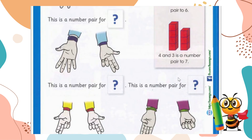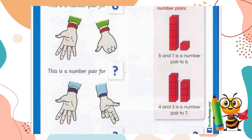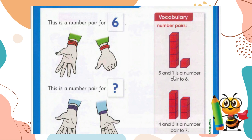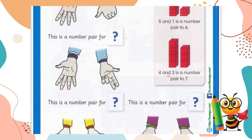Let's recap. Five and one is a number pair of six — five fingers and one finger make six. In the next example, four and three is a number pair of seven. We count: one, two, three, four, five, six, seven — four blocks here and three blocks here make seven. So four and three is a number pair of seven.